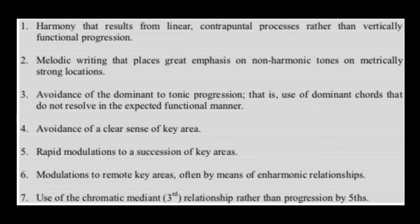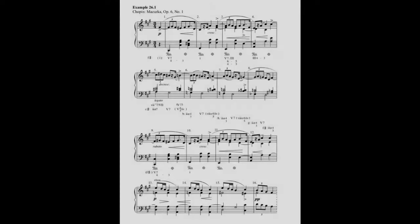In the Mazurka in F-sharp minor, example 21.6, Chopin employs linear motion in four voices to create an astonishing harmonic progression that defies Roman numeral analysis. In this excerpt, an analysis is given underneath, but the sequential passage that begins in measure 5 presents a complicated journey through several transient key areas.